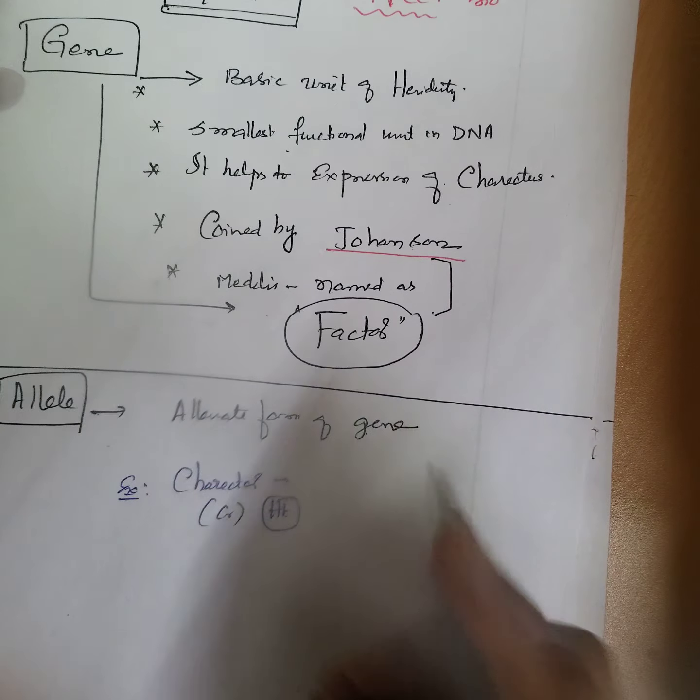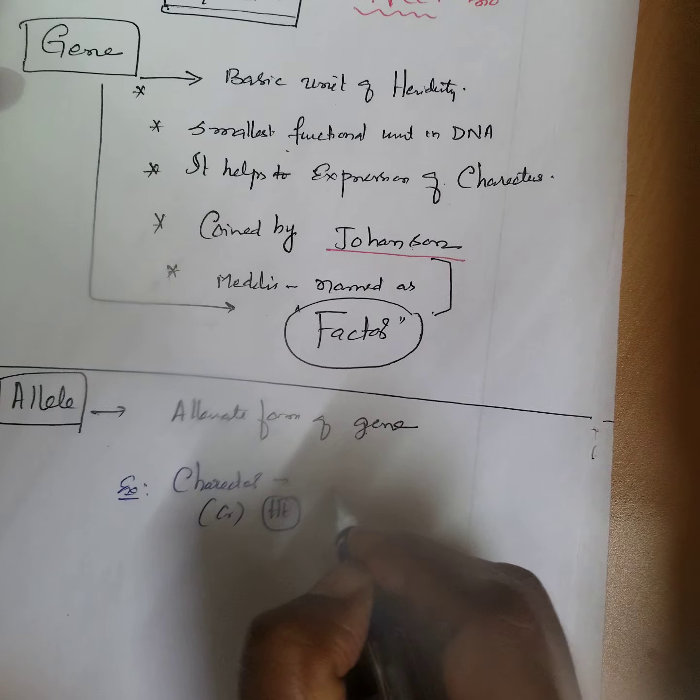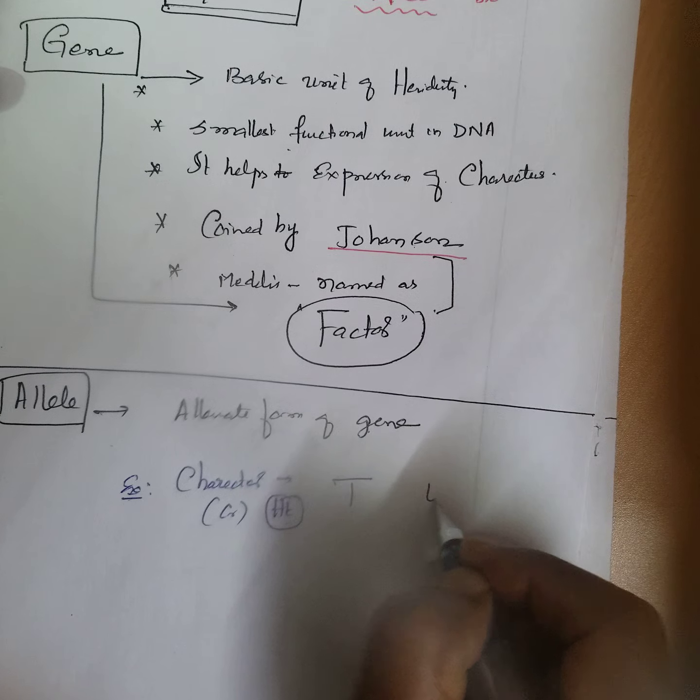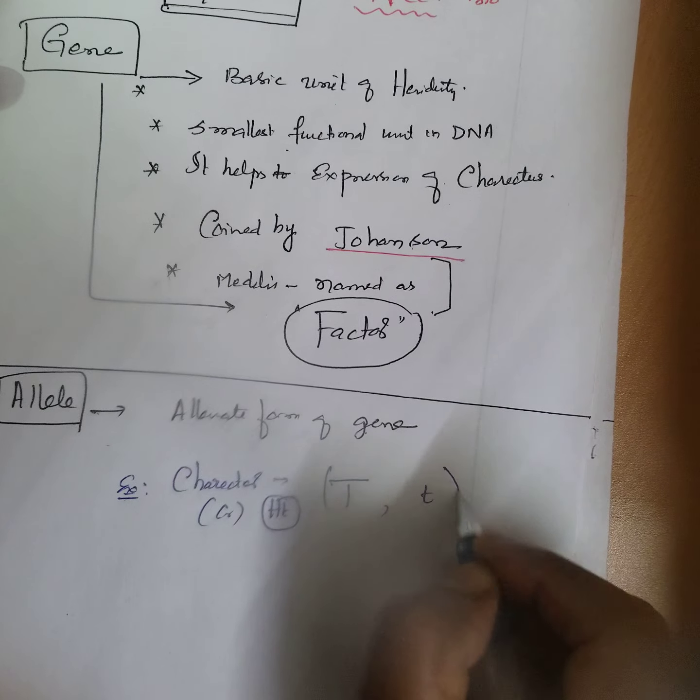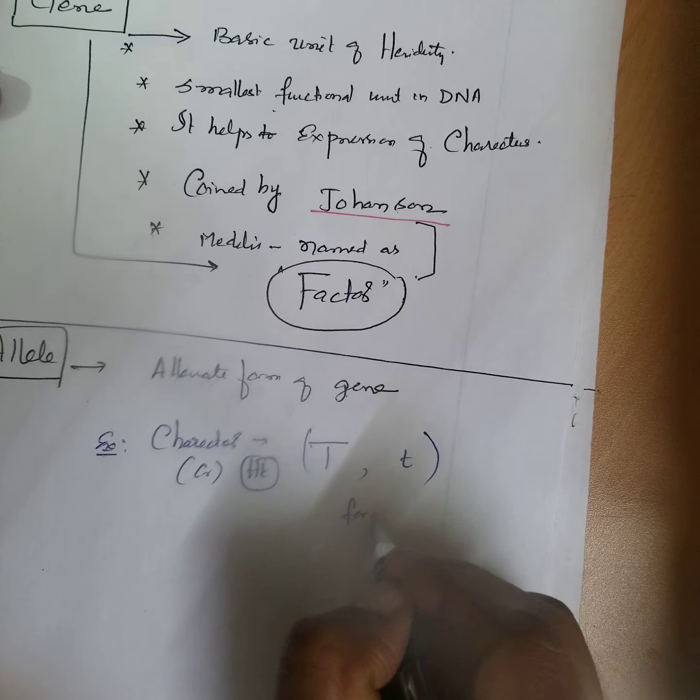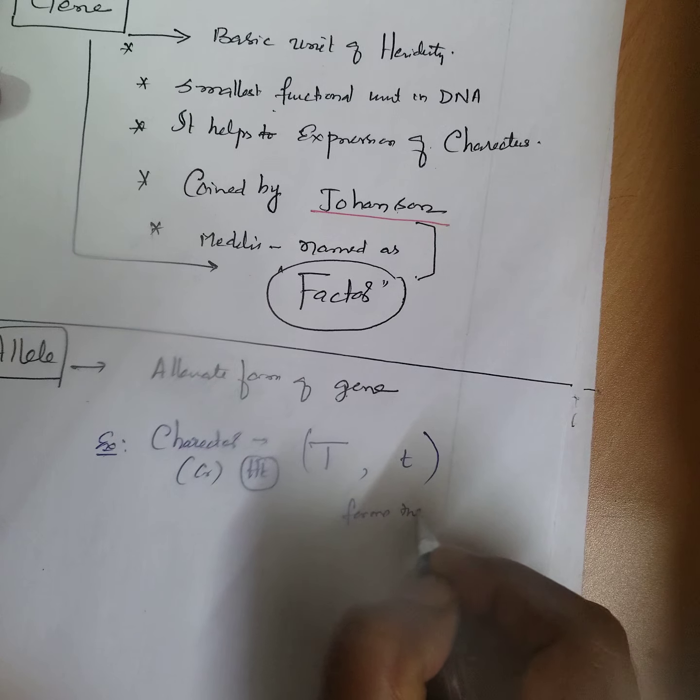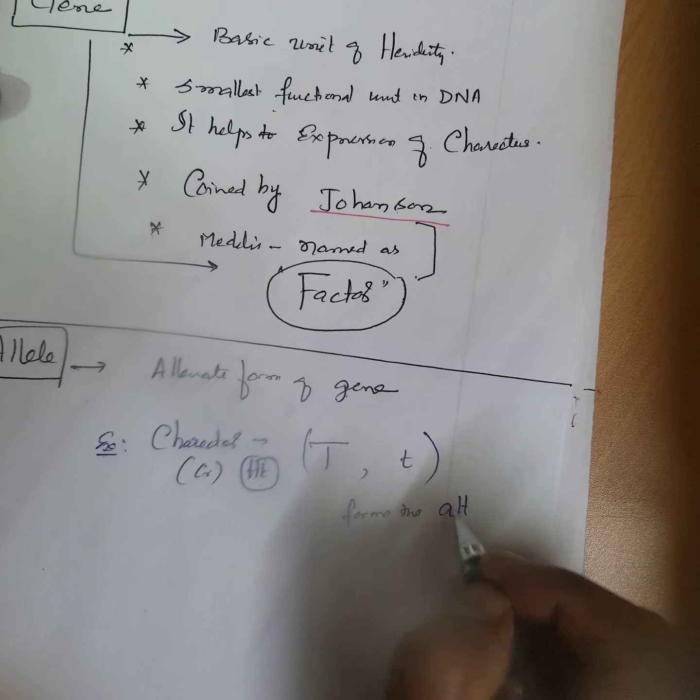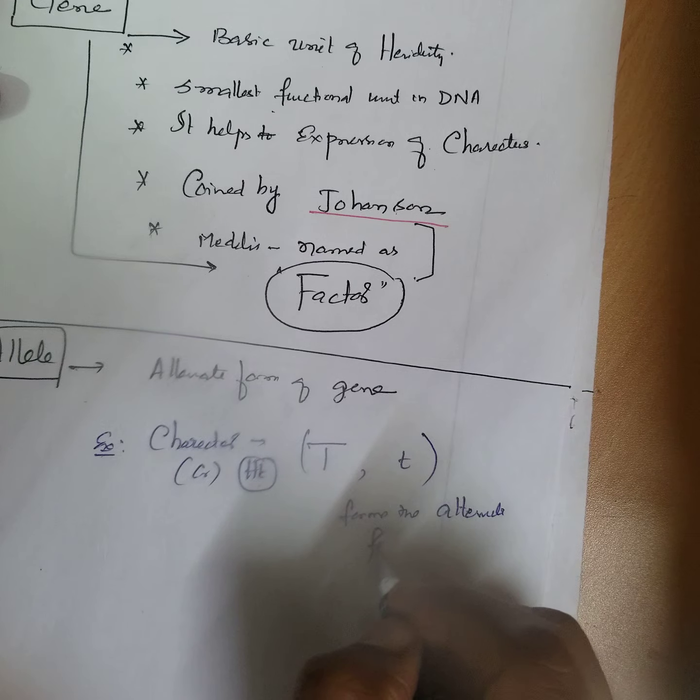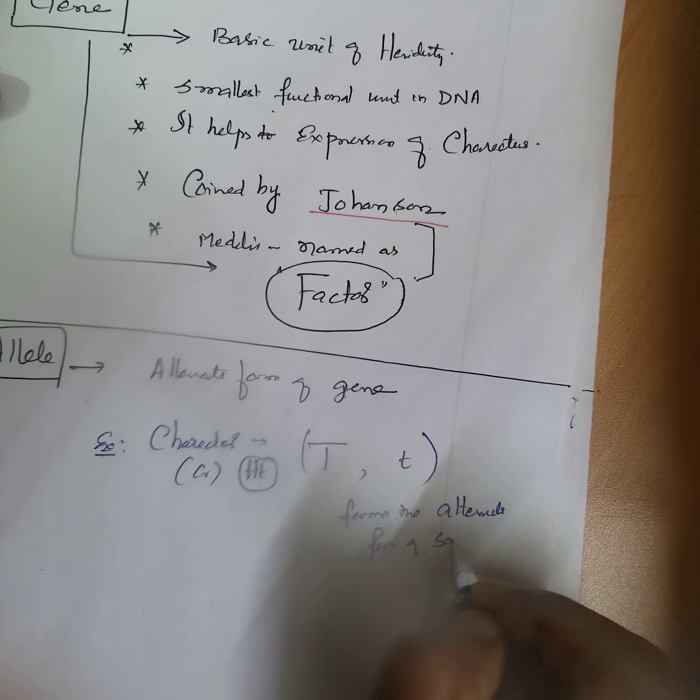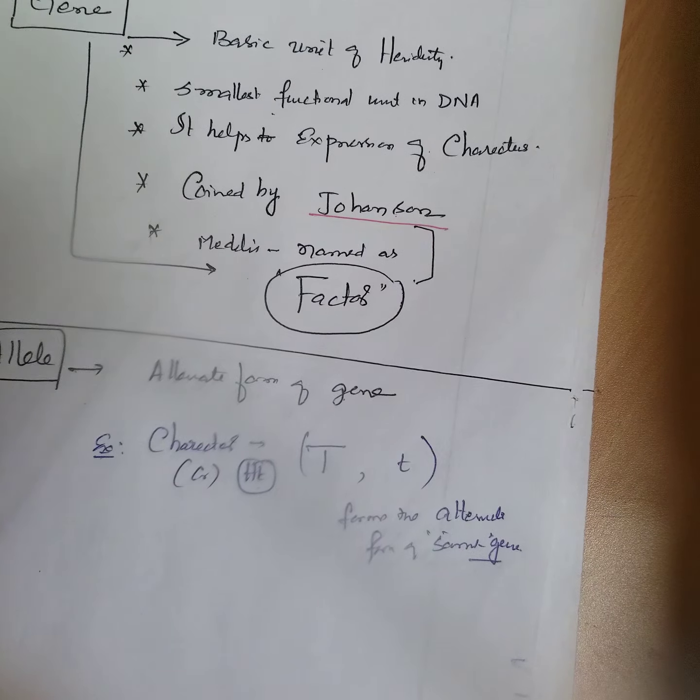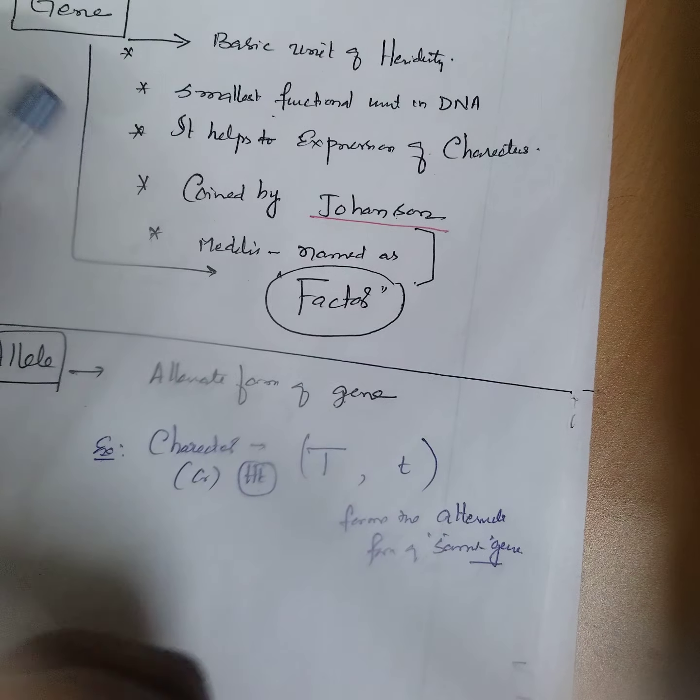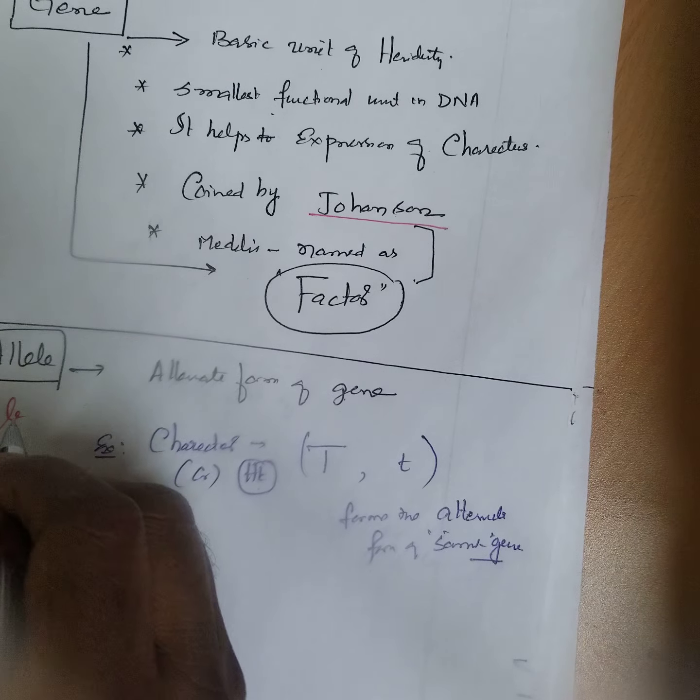If you take the height - tall and dwarf, that is short. We can call them tall or dwarf. This is the alternate form of the same gene. I'll make allele as a short form.